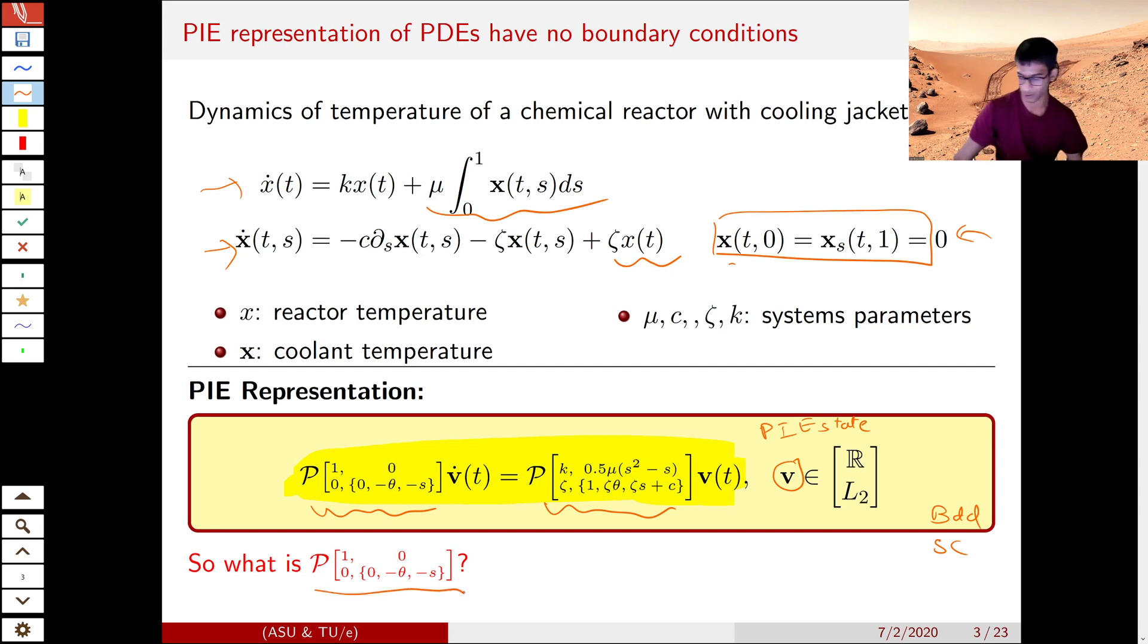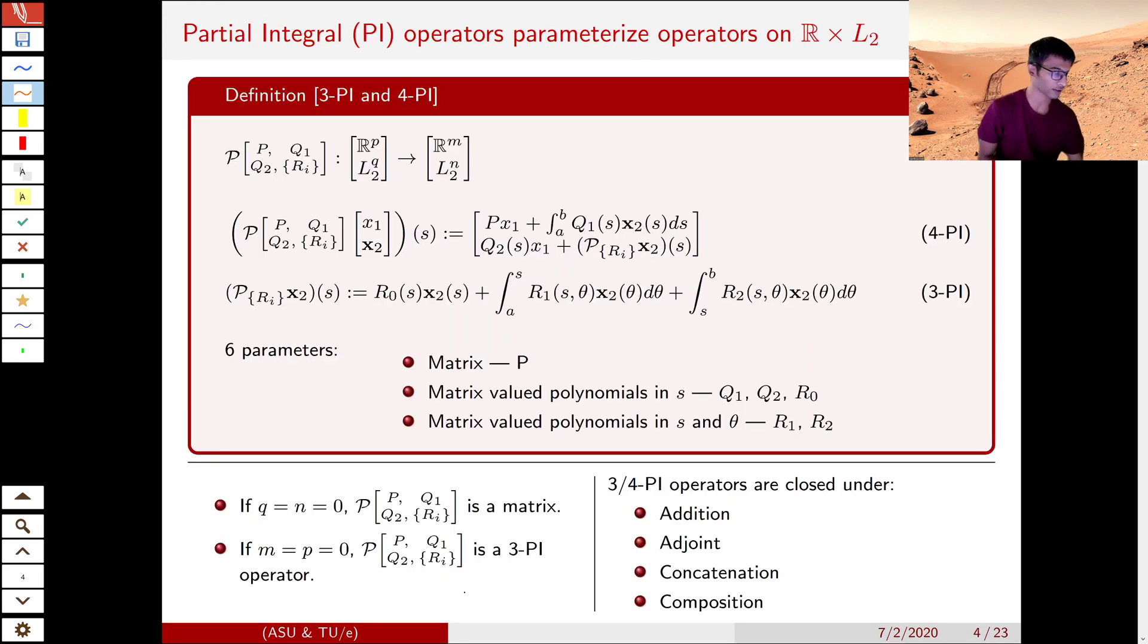So what are these PI operators? What do they look like? We define two class of PI operators. One is 3-PI and the other is 4-PI. 3-PI has three components.